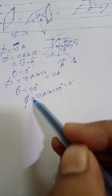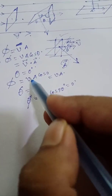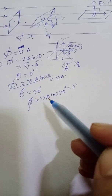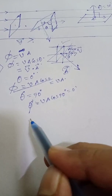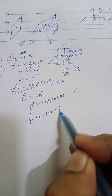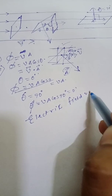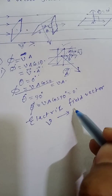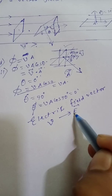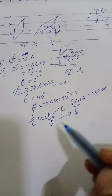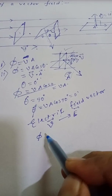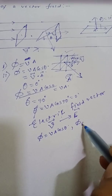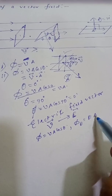In general, you can say that the flux of the velocity vector is given by the relation phi equal to V A cos theta. Now, instead of velocity vector, if you consider the electric field vector, then V vector is replaced by E vector. If flux of velocity vector is written as V A cos theta, then flux of electric field vector you need to write as E A cos theta.